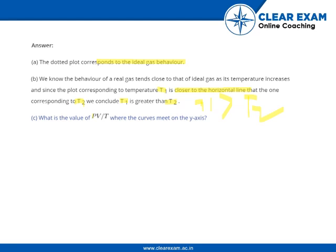What is the value of PV by T where the curve meets on the y-axis? As per the ideal gas equation, we know that PV by T equals nR.